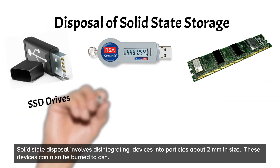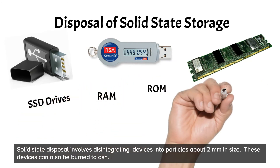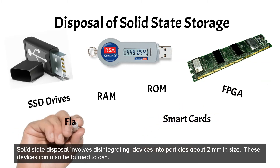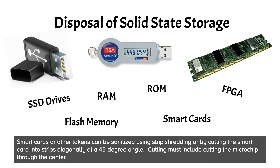Solid state disposal involves disintegrating devices into particles about two millimeters in size. These devices can also be burned to ash. Smart cards or other tokens can be sanitized using strip shredding or by cutting the smart card into strips diagonally at a 45-degree angle. Cutting must include cutting the microchip through the center.